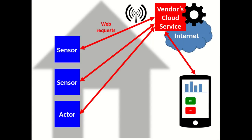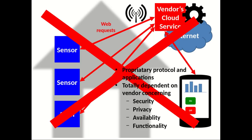solution like this: you get some sensors and actors, and you get access to the vendor's cloud. There's communication between the devices and the vendor's cloud through some web requests - it's more or less opaque. From there you have access via tablet or smartphone for control and observation. But this is not what we really want, because with such a solution you are totally dependent on the vendor, on the proprietary protocols and applications.